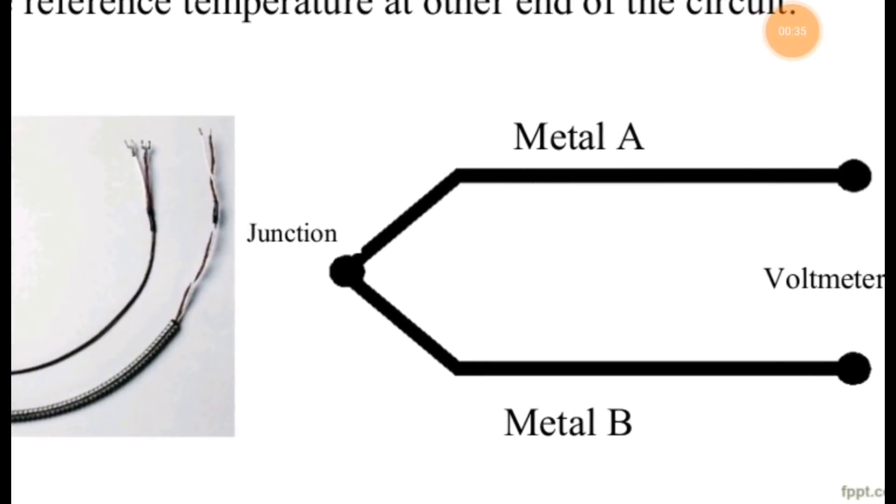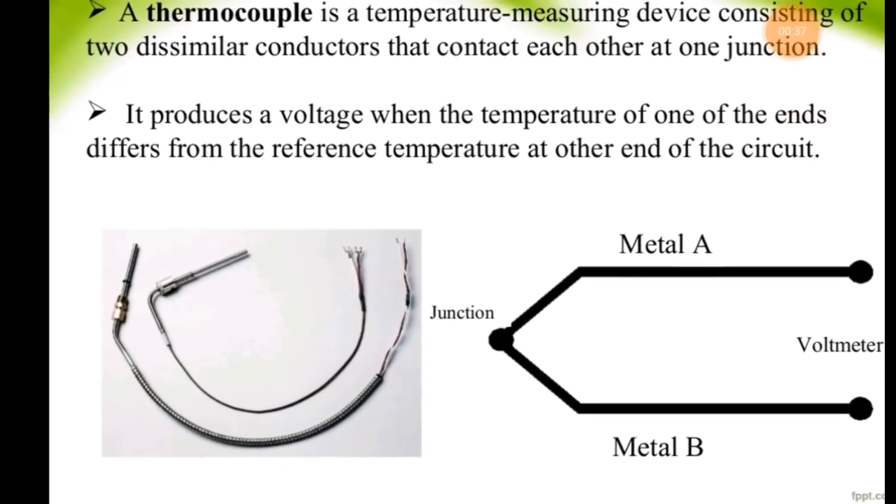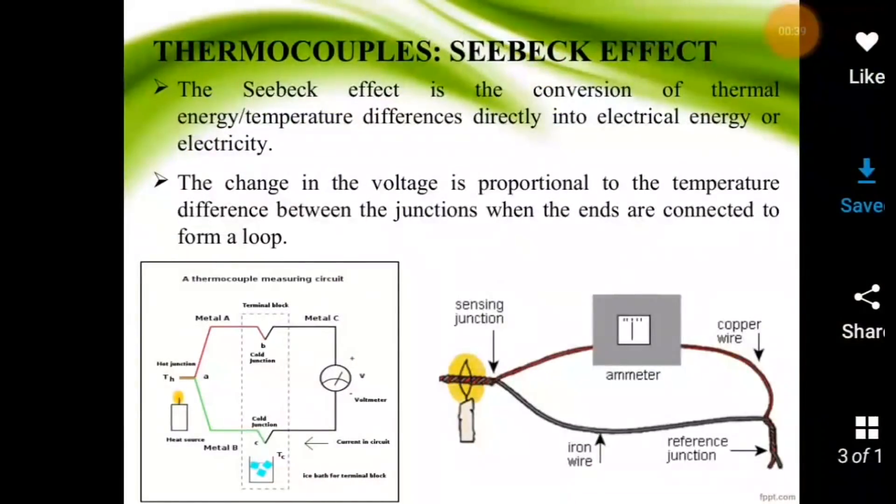The thermocouple is based upon the Seebeck effect. The Seebeck effect is the conversion of thermal energy or temperature difference directly into electrical energy or electricity. The change in voltage is proportional to the temperature difference between the junctions when the ends are connected to form a loop.